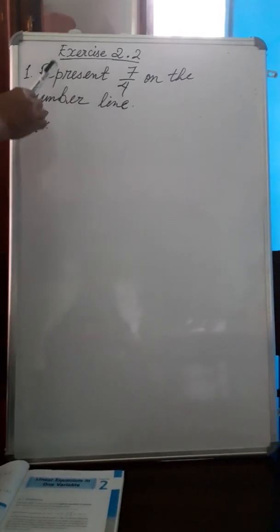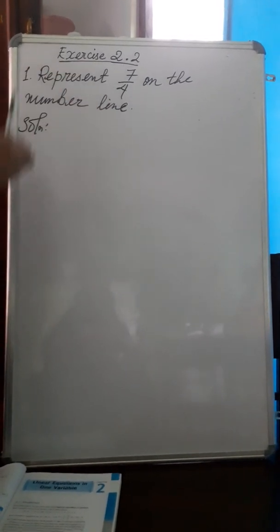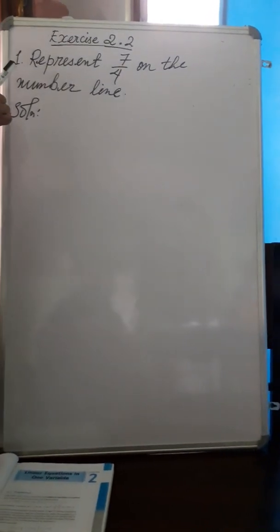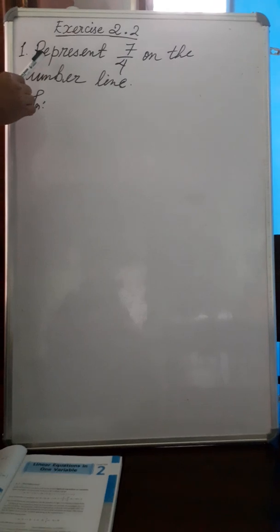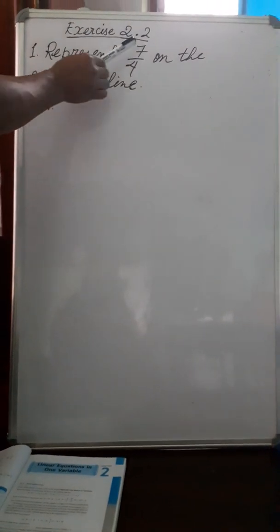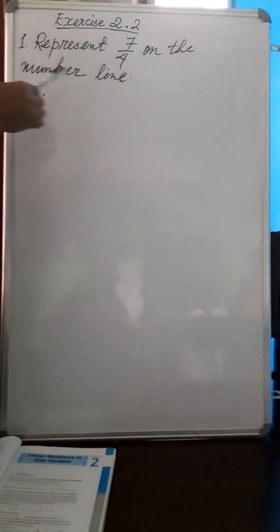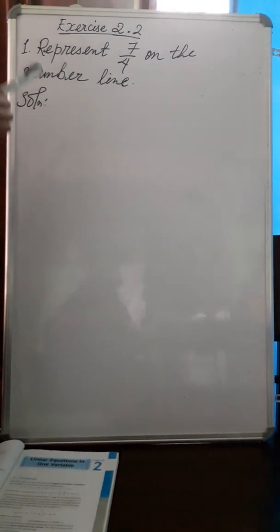Now we are going to do exercise 2.2, number 1: represent 7 by 4 on the number line.